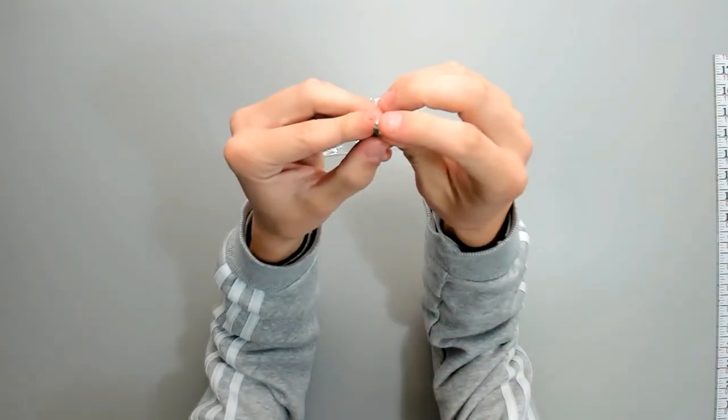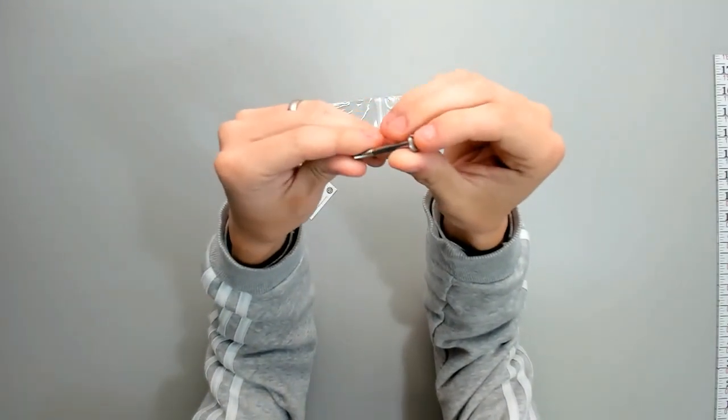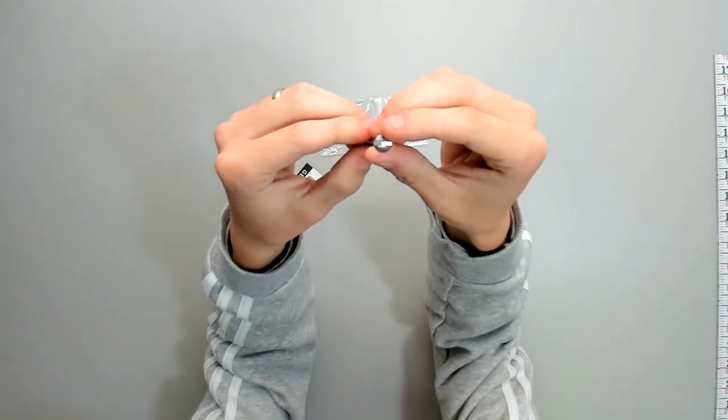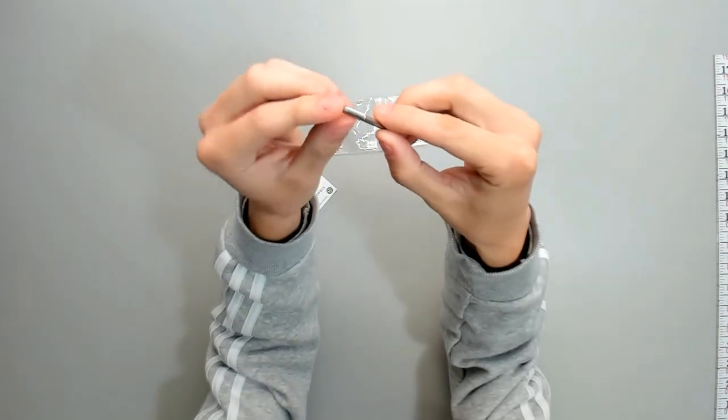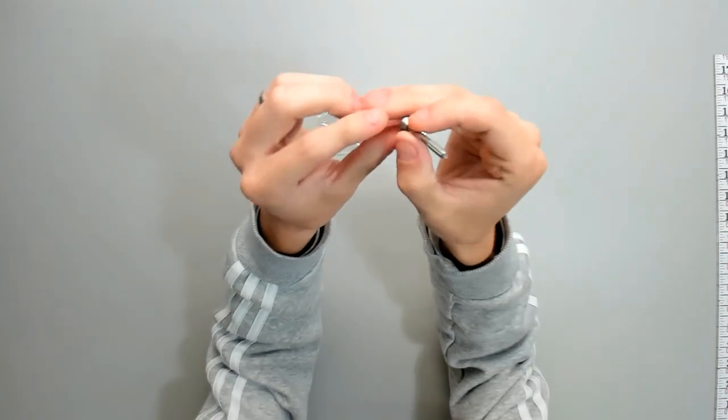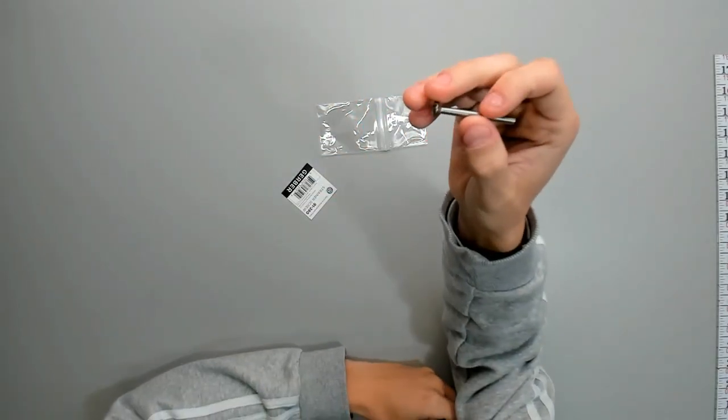You can see a flat head screwdriver can be used to tighten, loosen, or replace the screw. The threads are down here, and this holds the strainer into the drain.